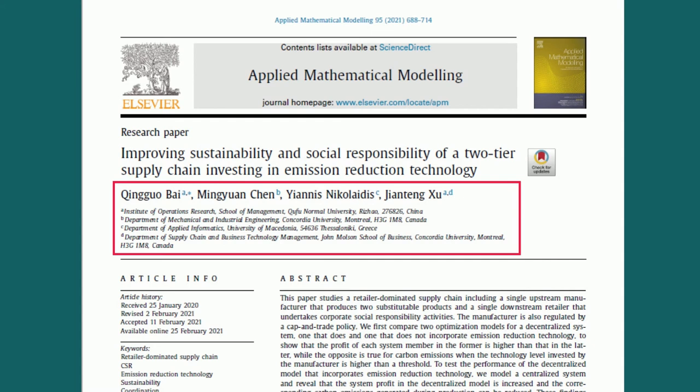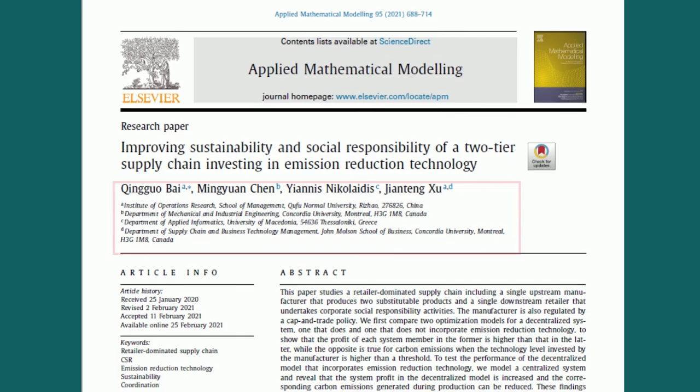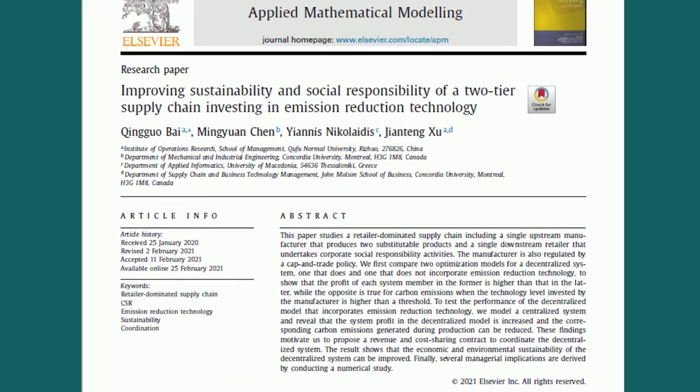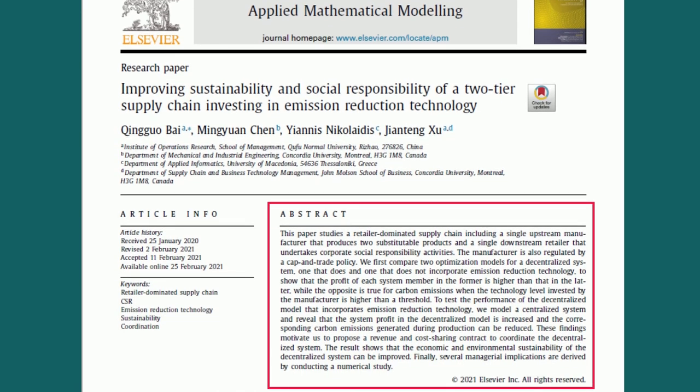Remember, real scholars don't try to hide their credentials — it's what makes their work authoritative. Another item to look for on the title page is an abstract or synopsis of the article. This is a great feature that will allow you to briefly read what the article covers and decide whether it really fits your specific topic.